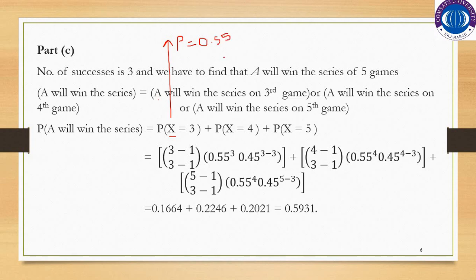Whenever we substitute X=3, it indicates Team A wins the series on the 3rd game; X=4 means winning on the 4th game; and so on. After summing these probabilities, we get 0.5931, which is the probability that Team A will win the regional playoff series.